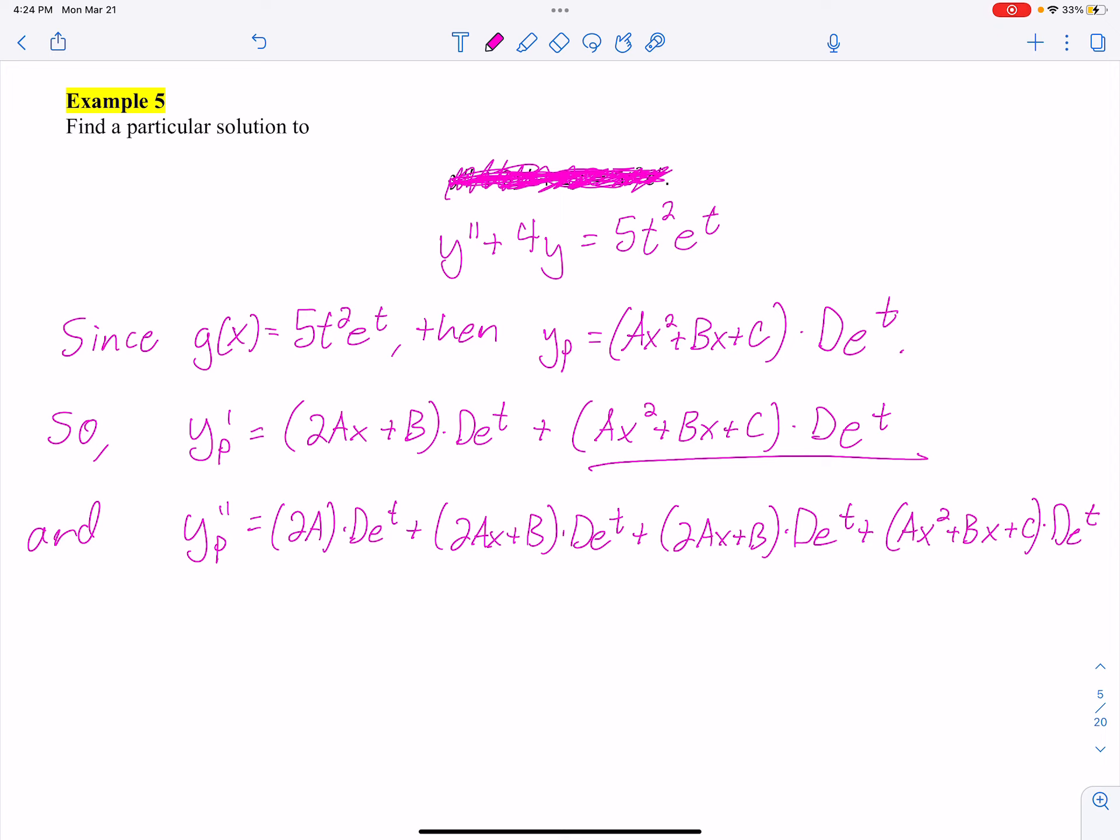This does make our life a little easier. So I'm going to keep this, we need to use this. That's y_p. I'm also going to take y_p's second derivative, and I'm going to factor out the De^t, and I'm going to leave it at the end. So I get 2A + 2Ax + B + 2Ax + B + Ax² + Bx + C.